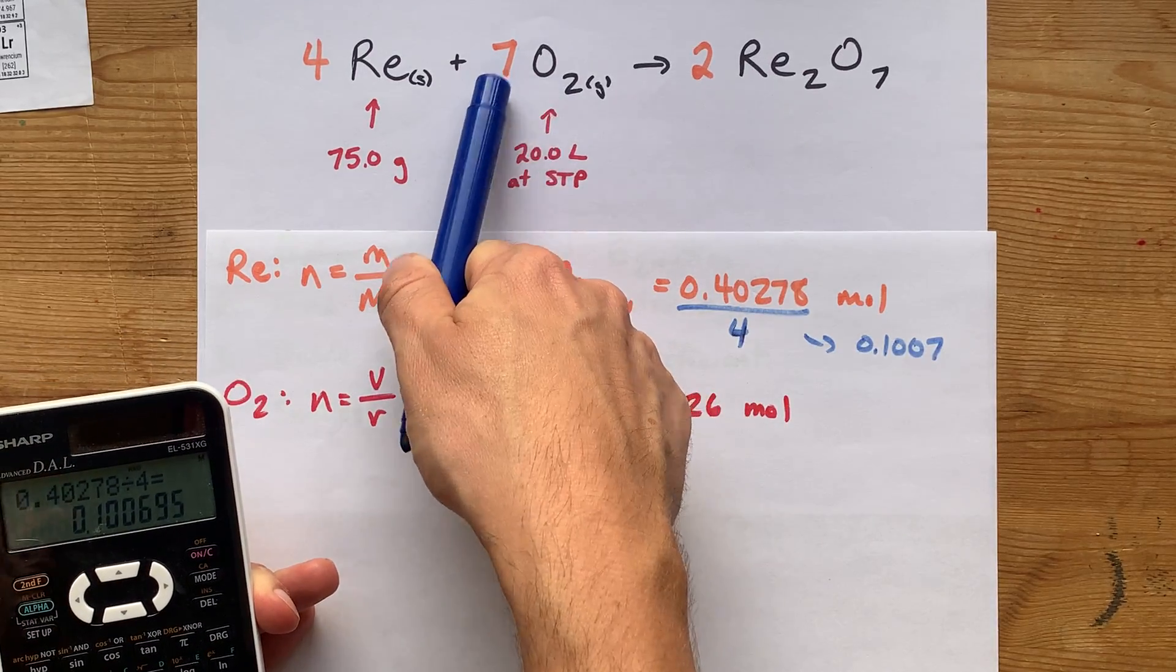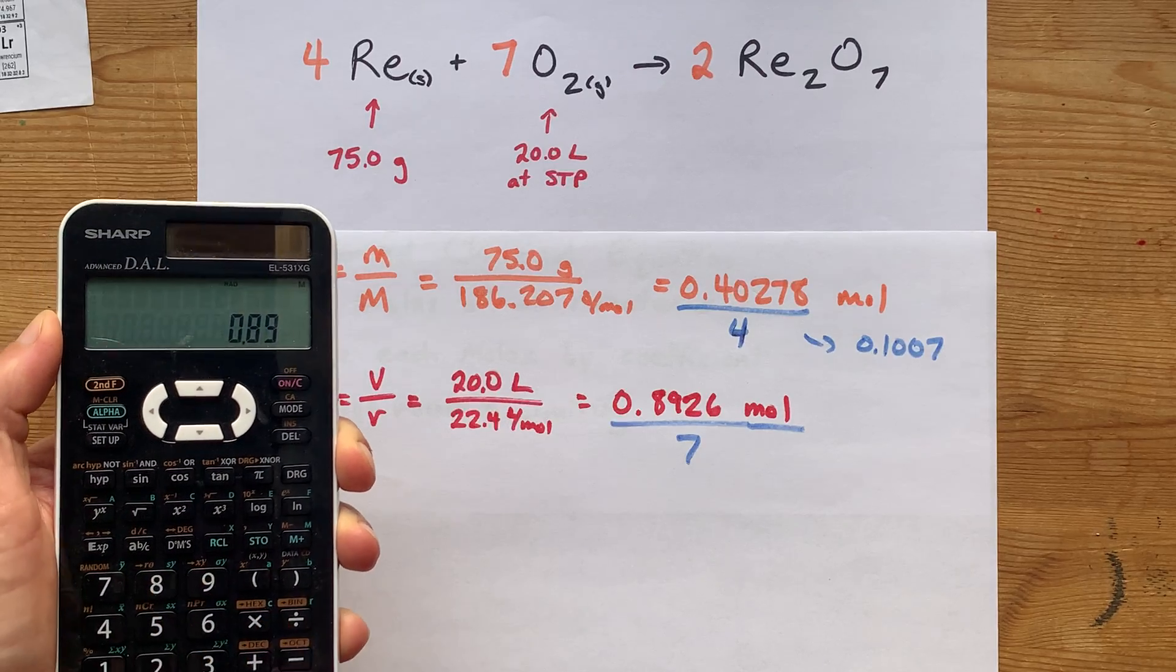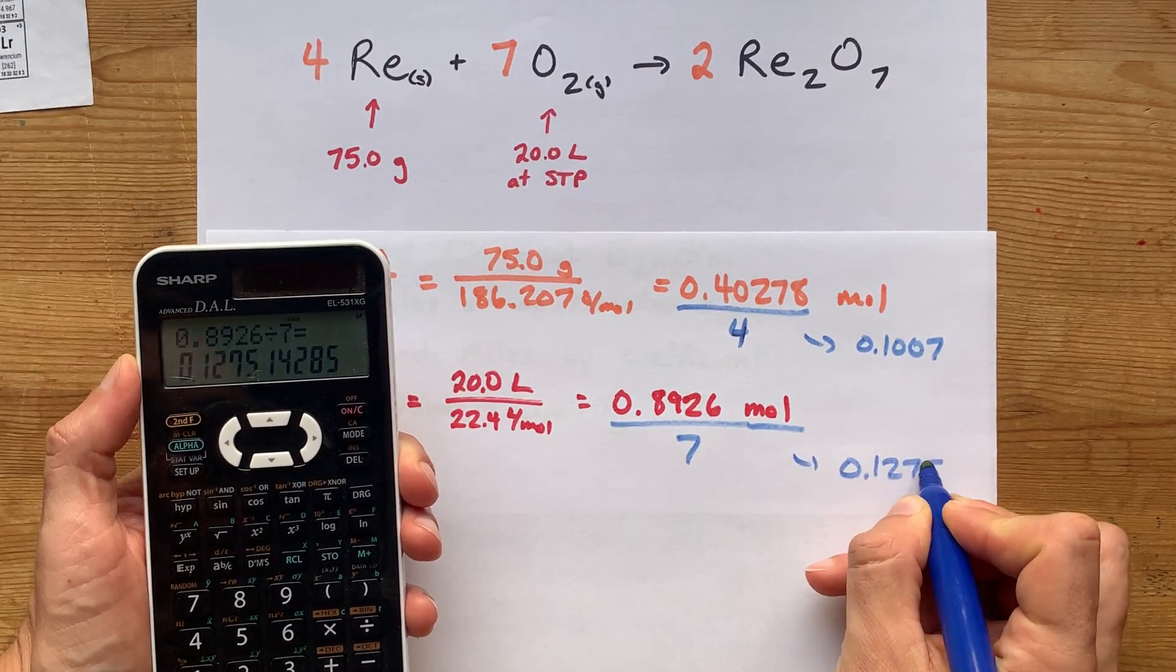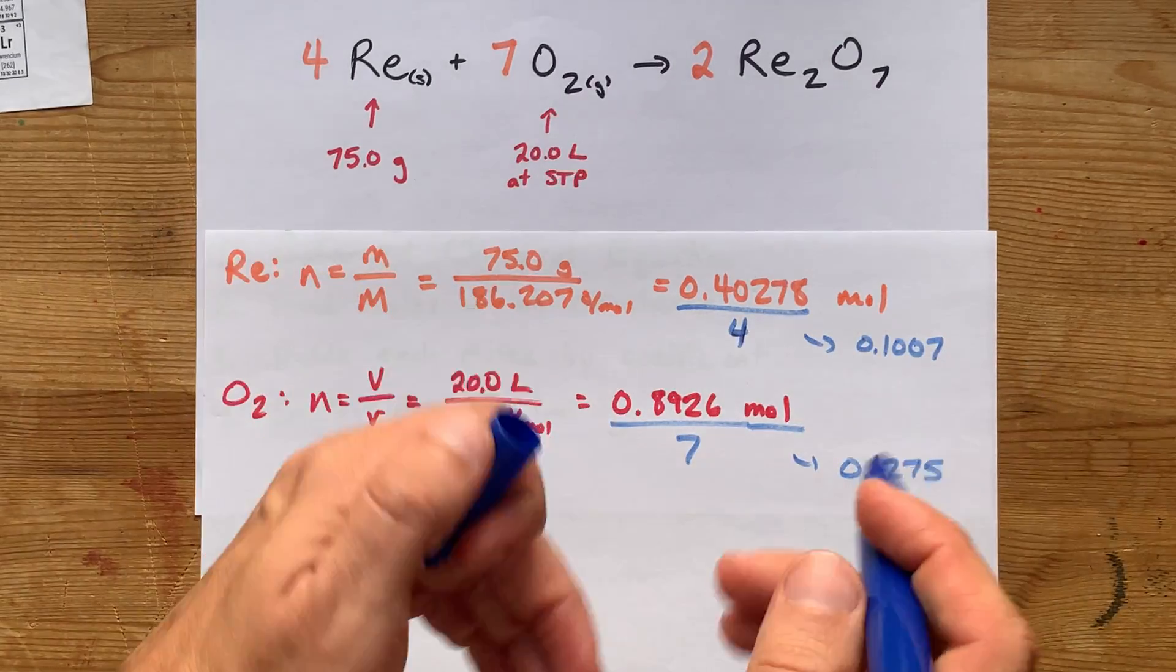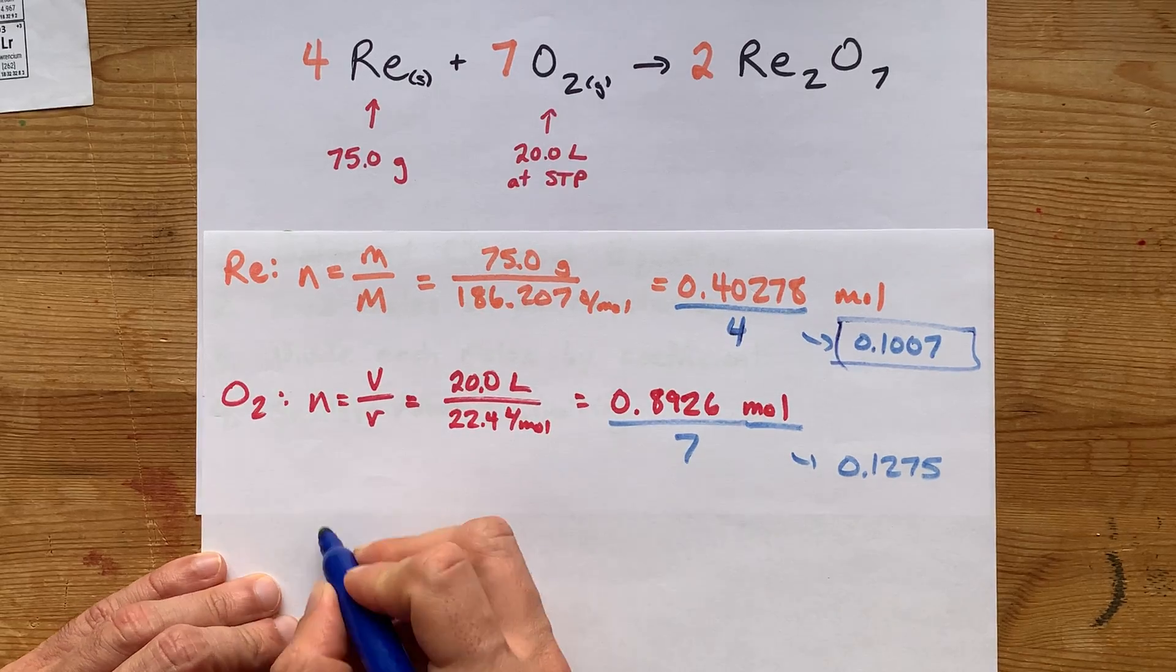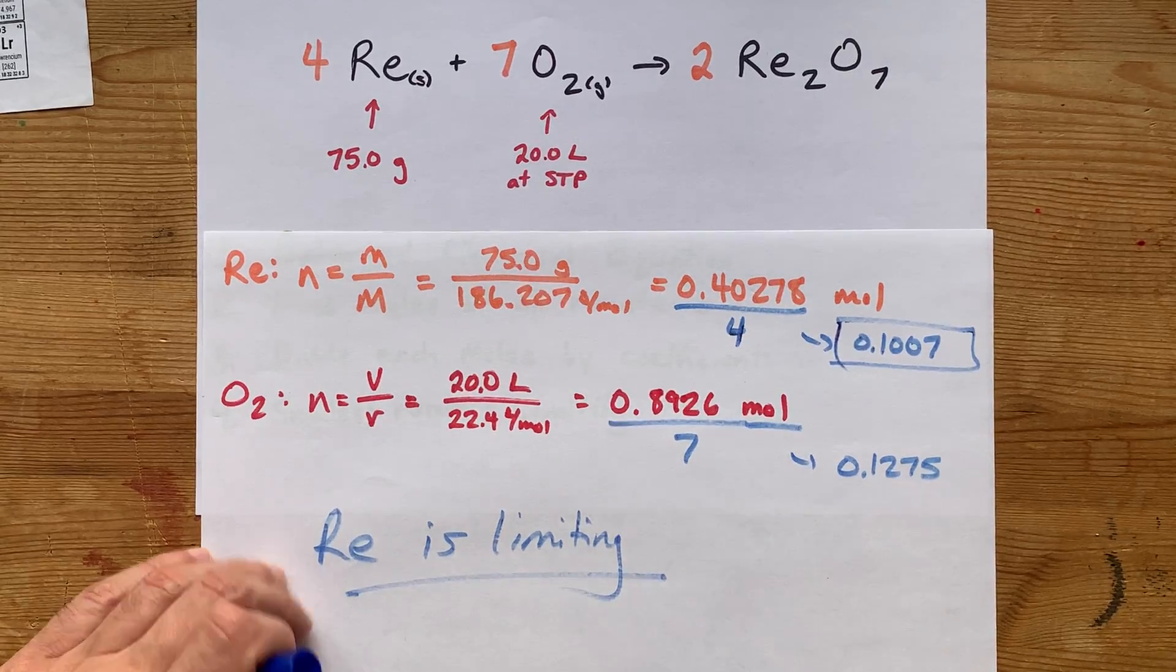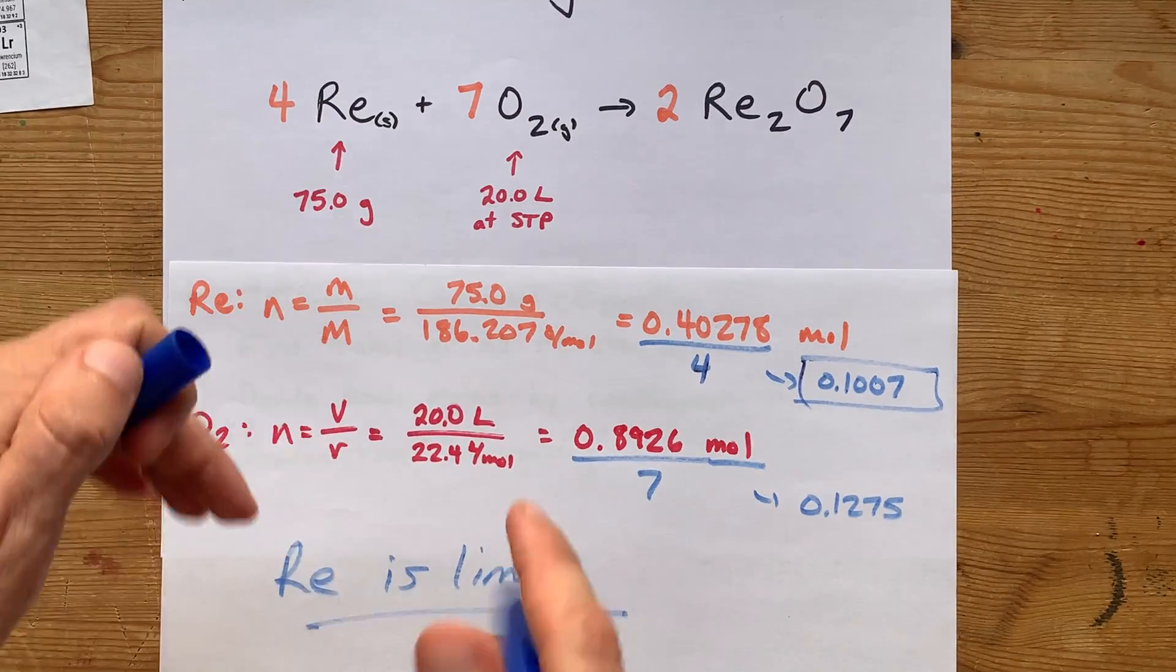And oxygen has a coefficient of 7, so I'm going to divide this number by 7. 0.8926 divided by 7 gives me 0.1275. Whichever of those results is smaller corresponds to the limiting reactant. This one's smaller, and therefore Re is the limiting reactant. That's it. I've answered the question of how to find the limiting reactant.